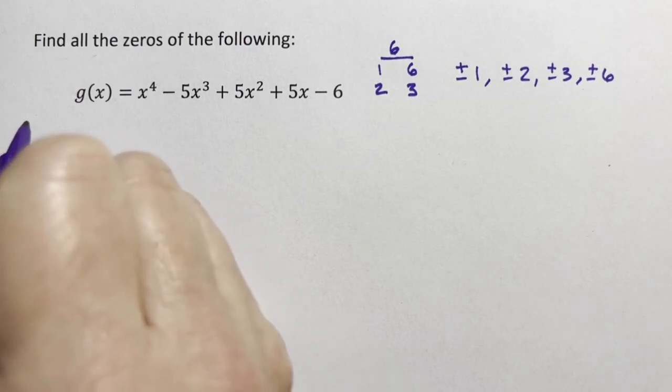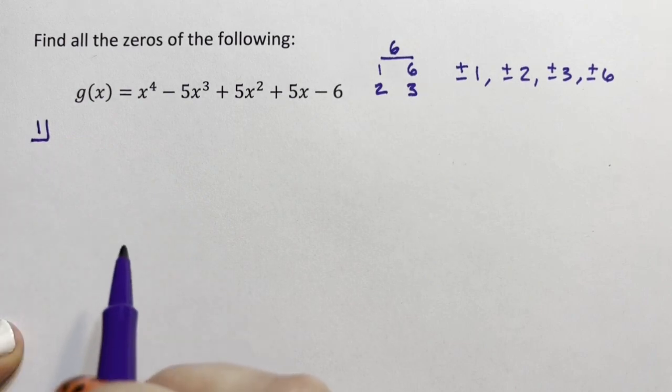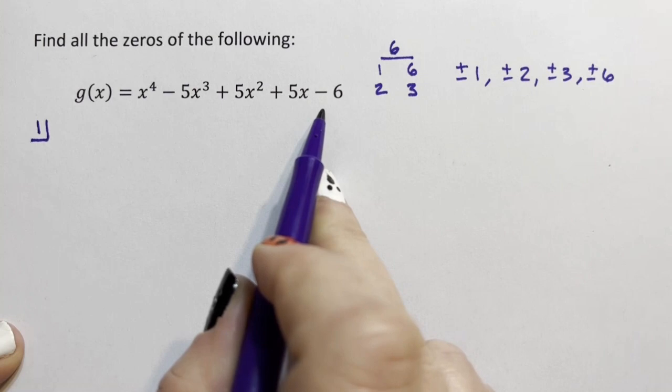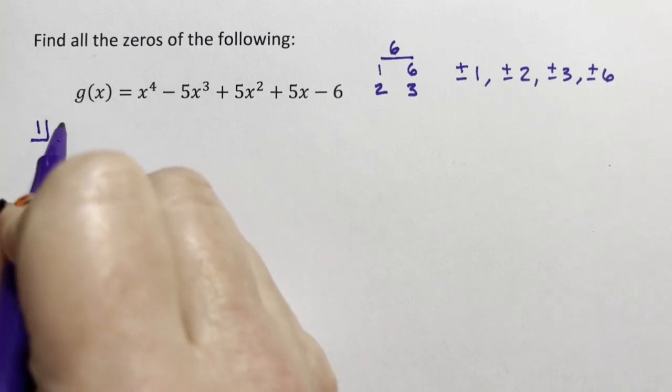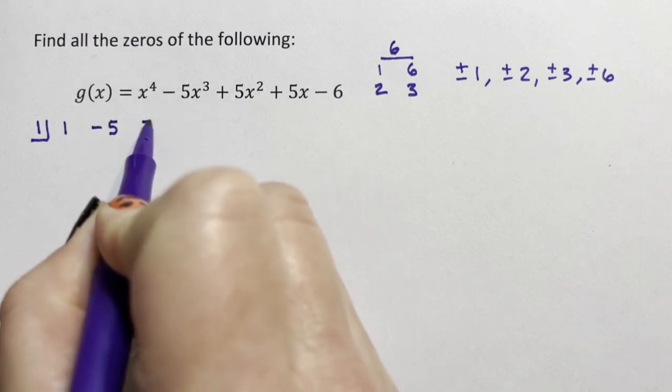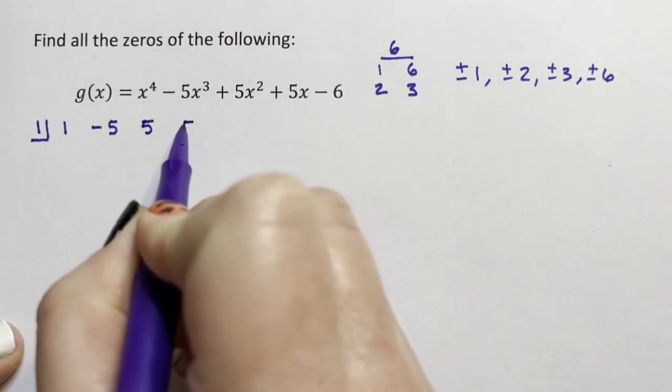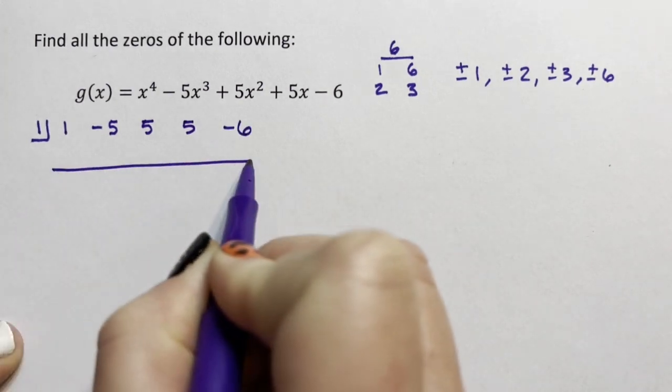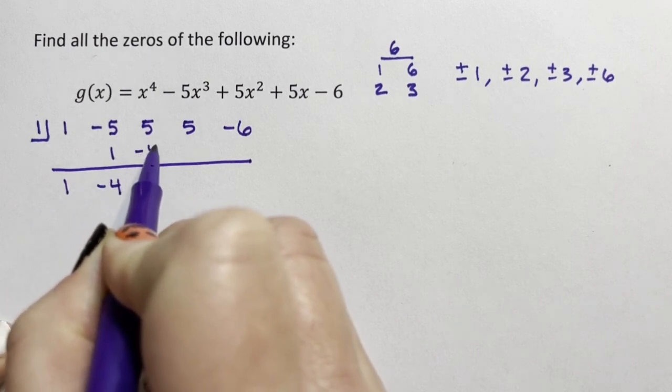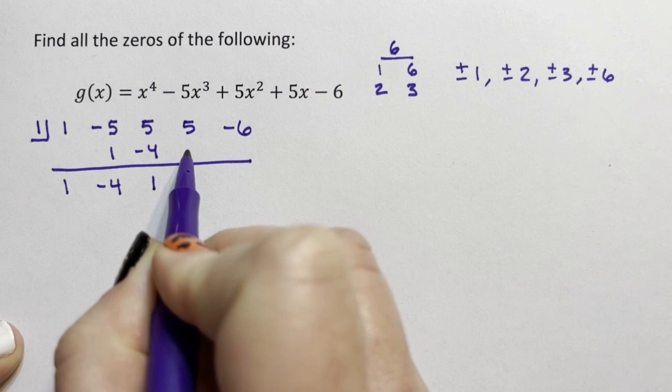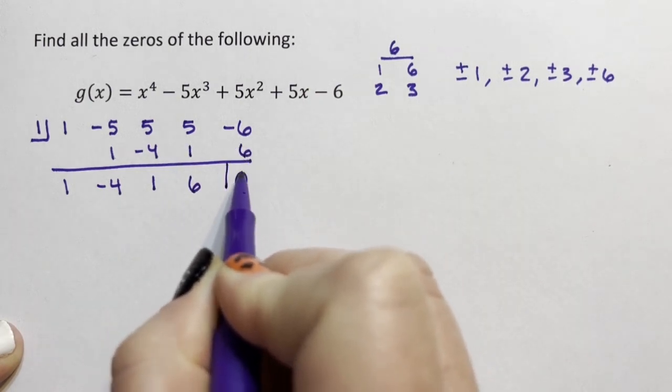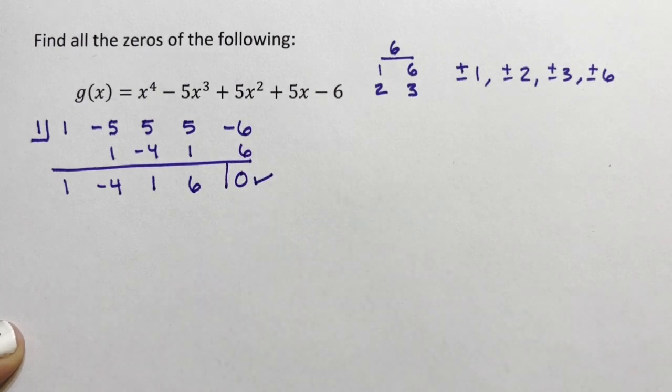So if I start with 1 and I'm going to use synthetic division to help me out, I'm going to look at the coefficients of my variables to help me here. So we have 1x⁴ minus 5x³, 5x², 5x, and a negative 6. Bring the 1 down, multiply, add down, multiply, add down, multiply, add down, multiply.